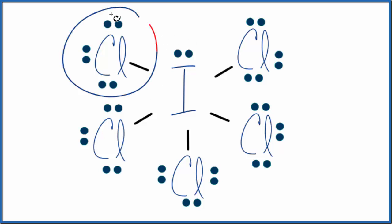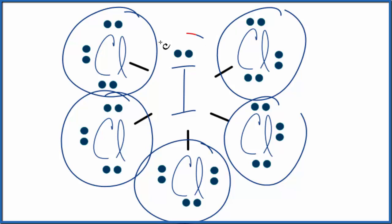We can imagine all of these things here spreading out, pushing against each other and spreading out as far away as they can from each other. That would give us the molecular geometry for ICl5.